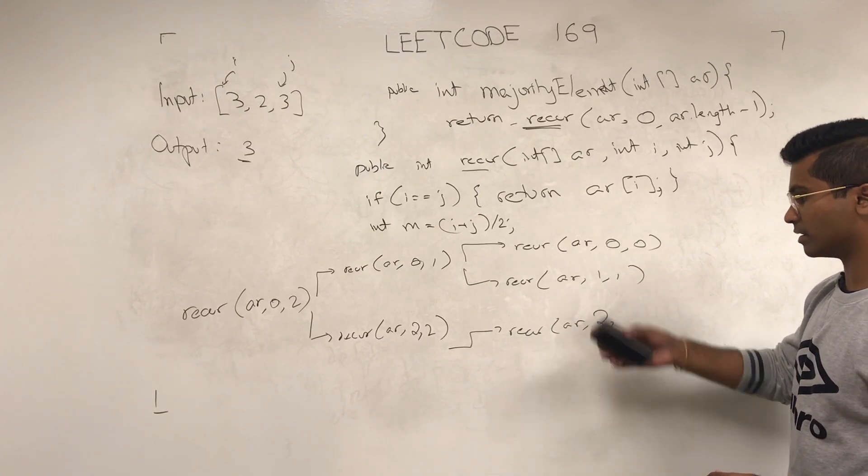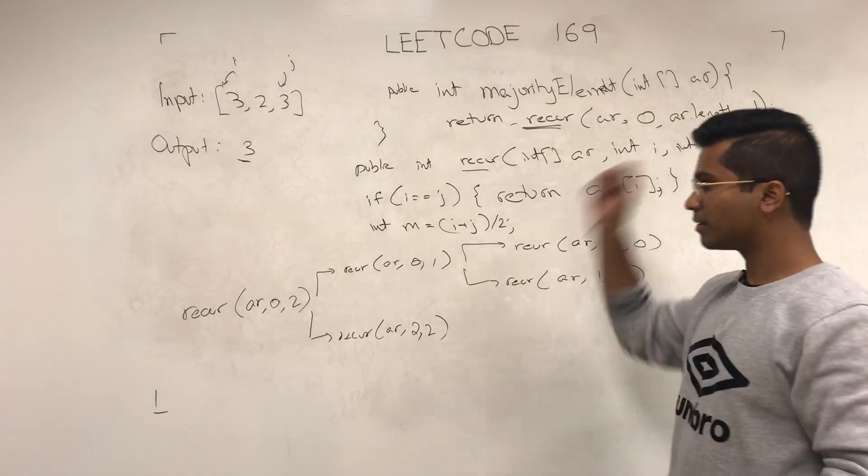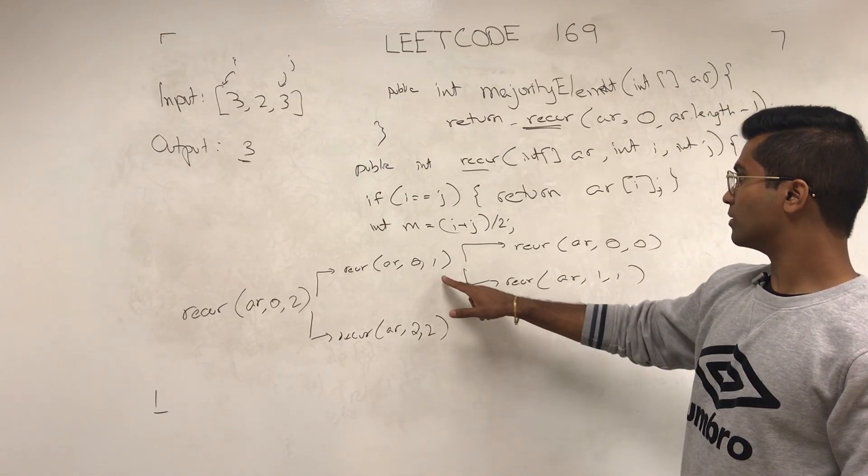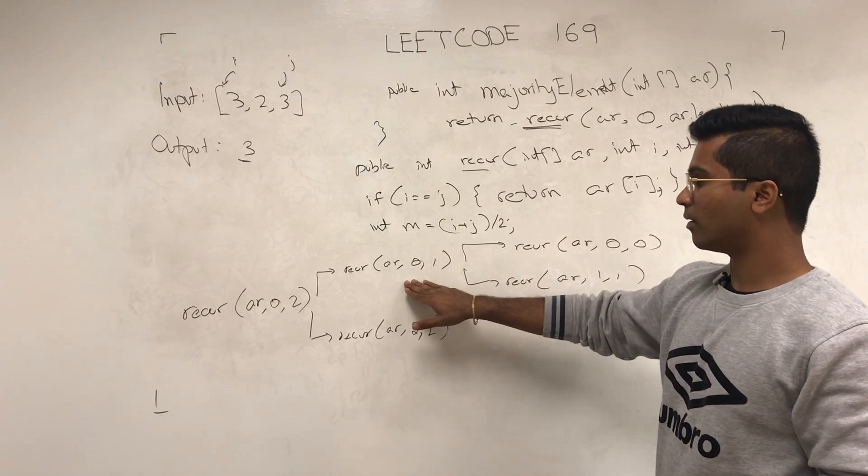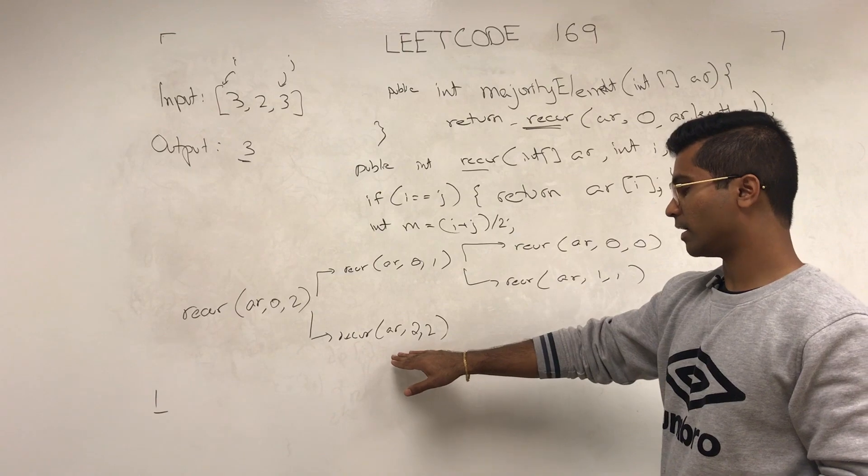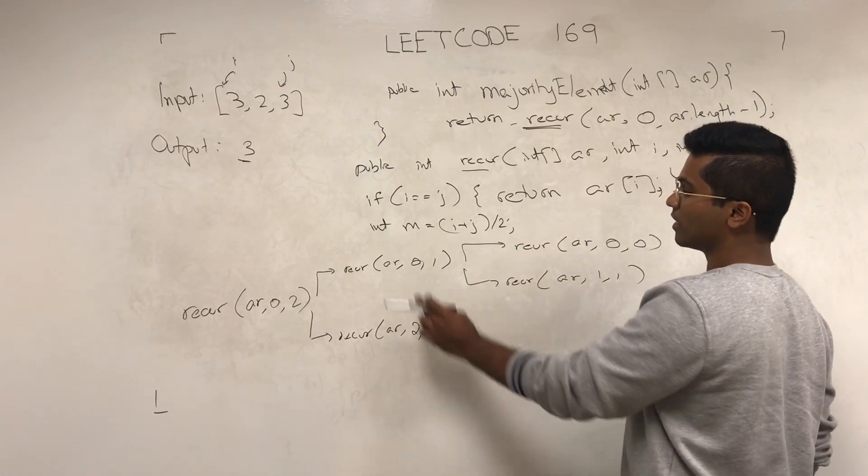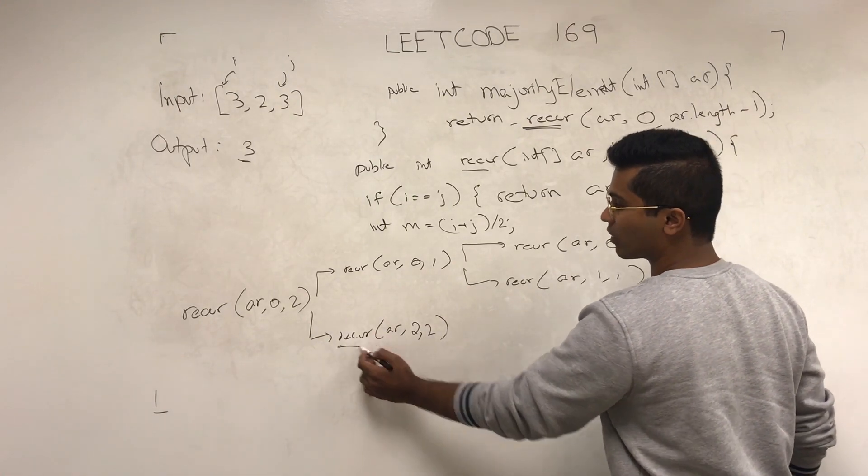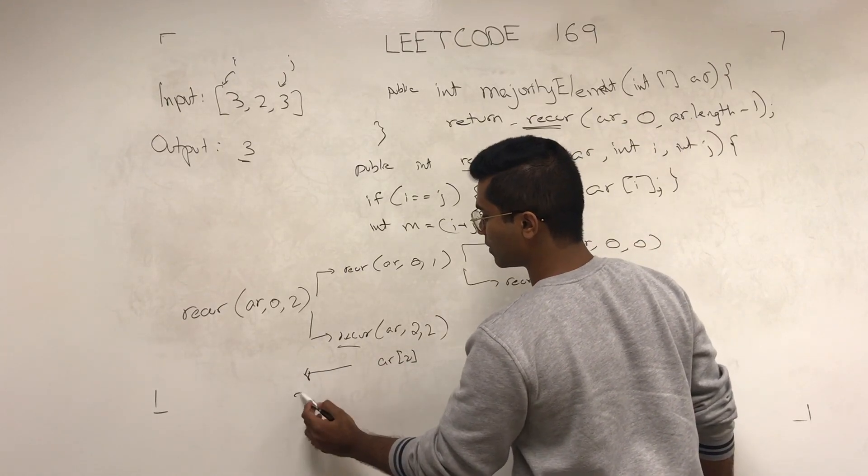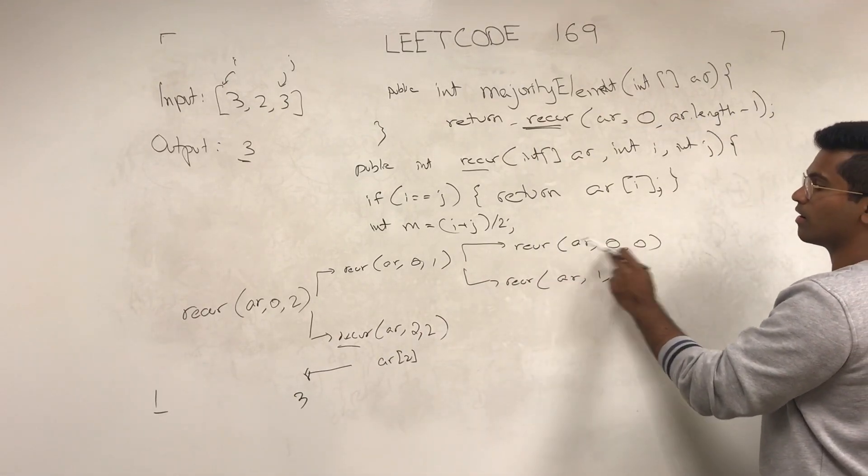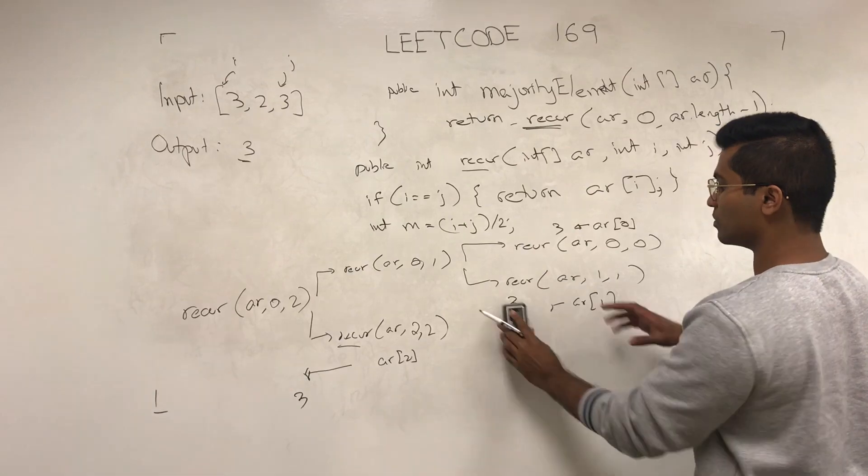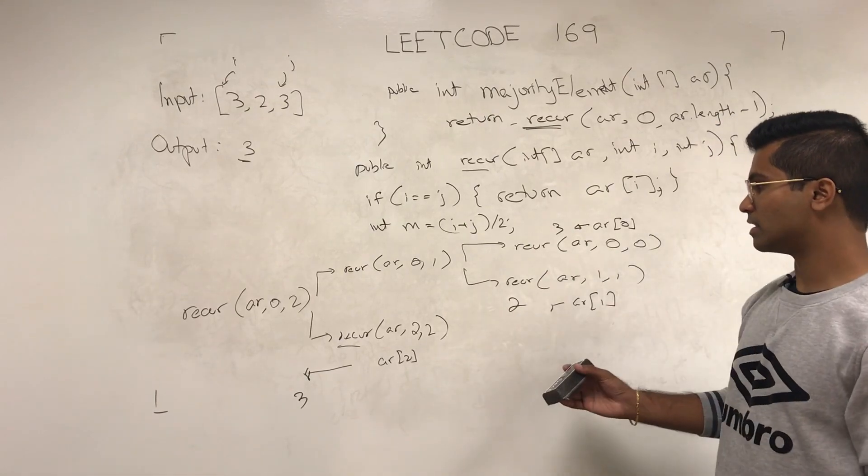Yeah, that makes sense. So he's going to call that one. The first one is going to call i to m, and the second one is going to call m plus one to j. Yeah, so when m plus one to j, when this recur recursively calls it, he's going to return AR of two which is three. This is going to return AR of zero which is three, and is going to return AR of one which is three, which is two, which is two.